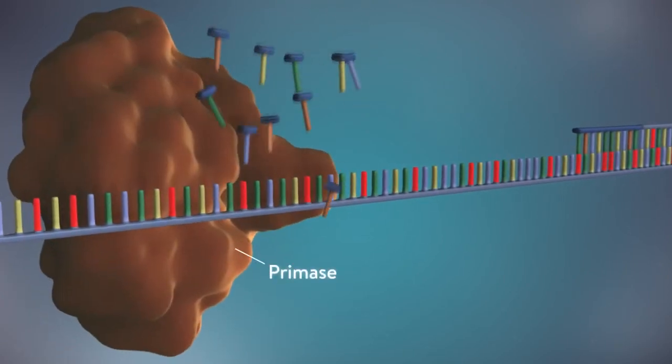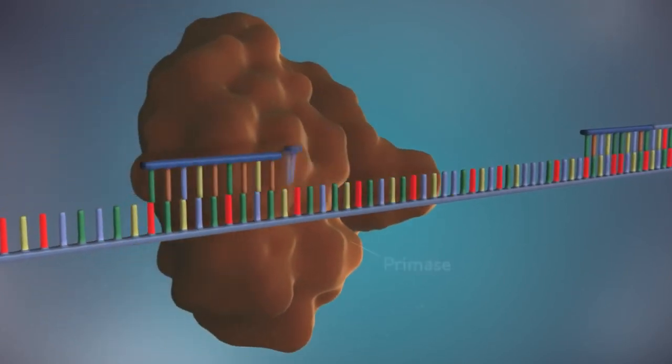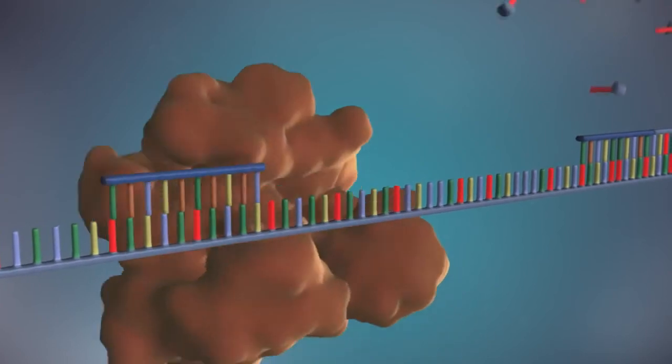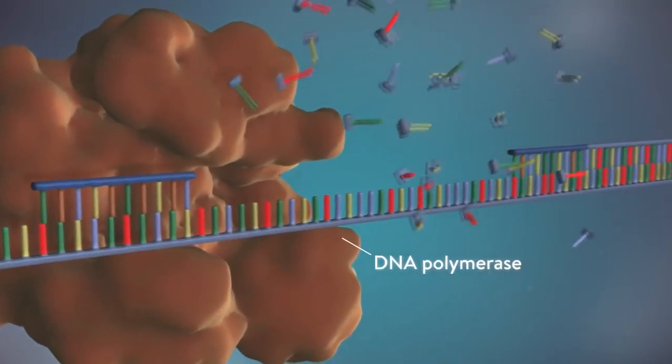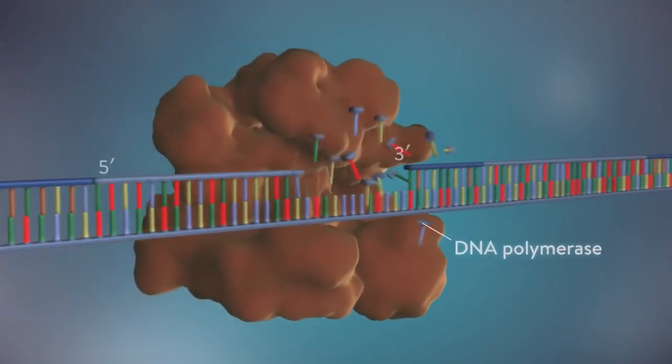The next primer is then added further down the lagging strand. Another Okazaki fragment is then made and the process is repeated again.